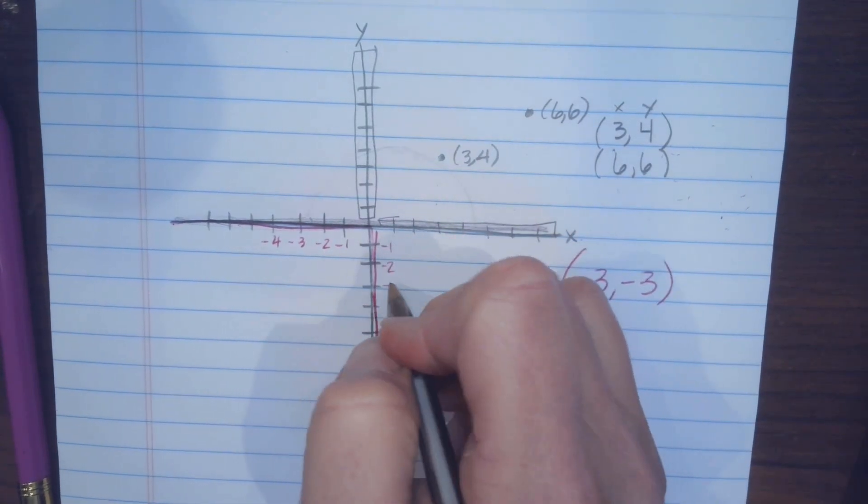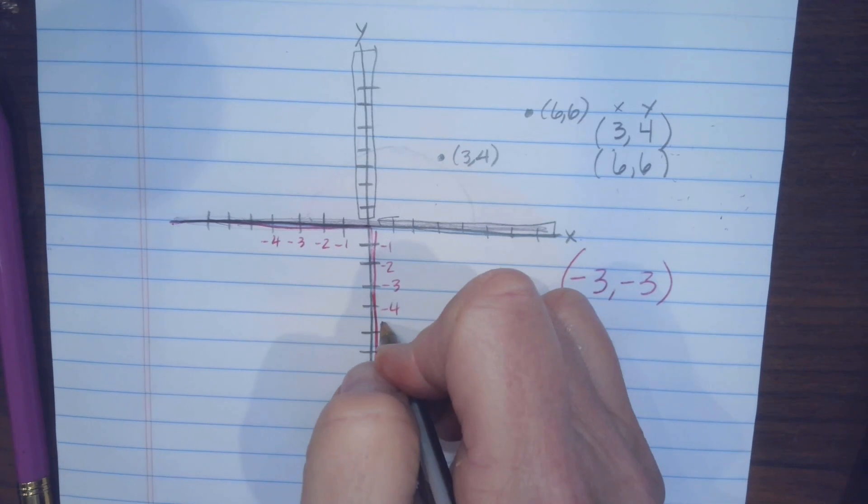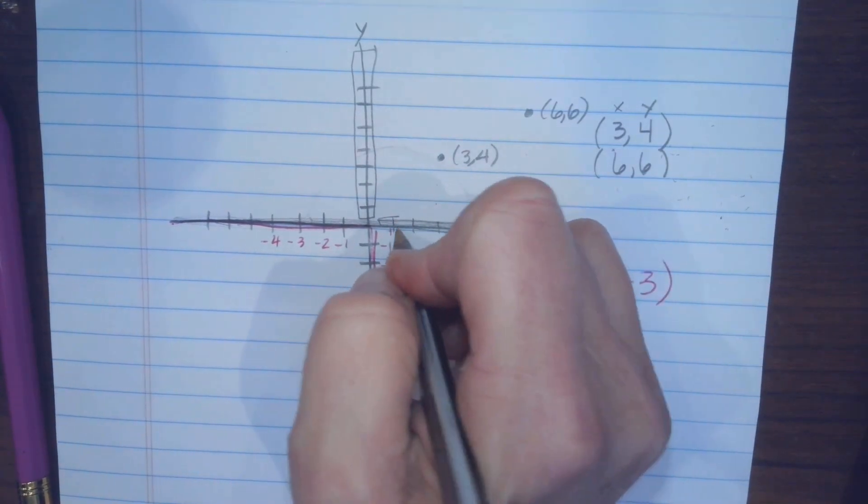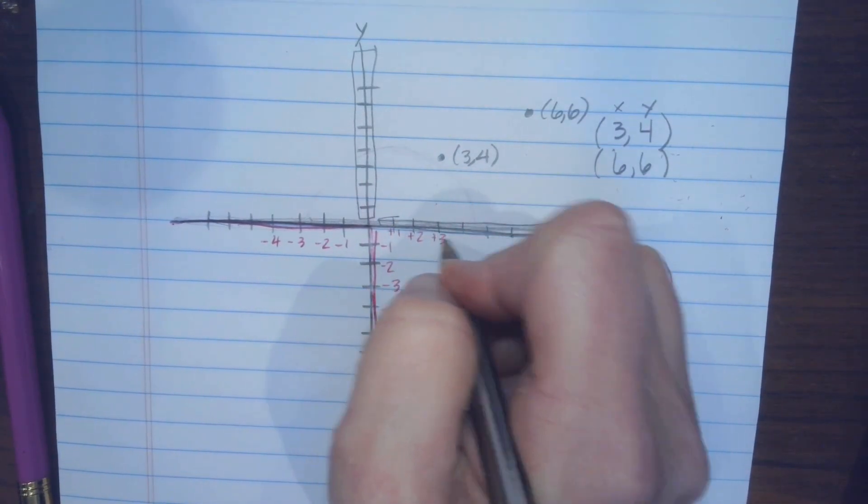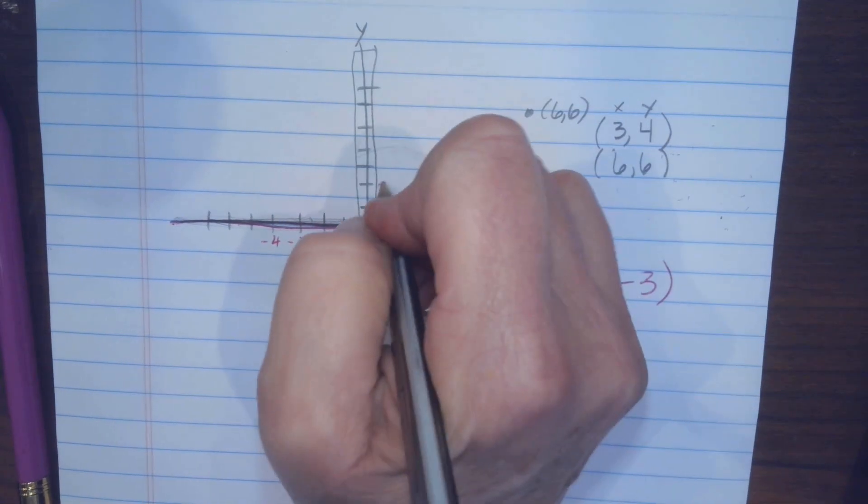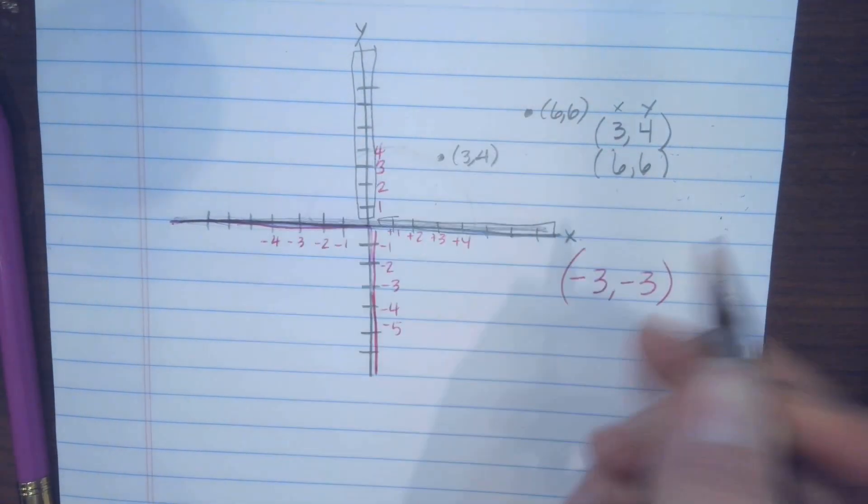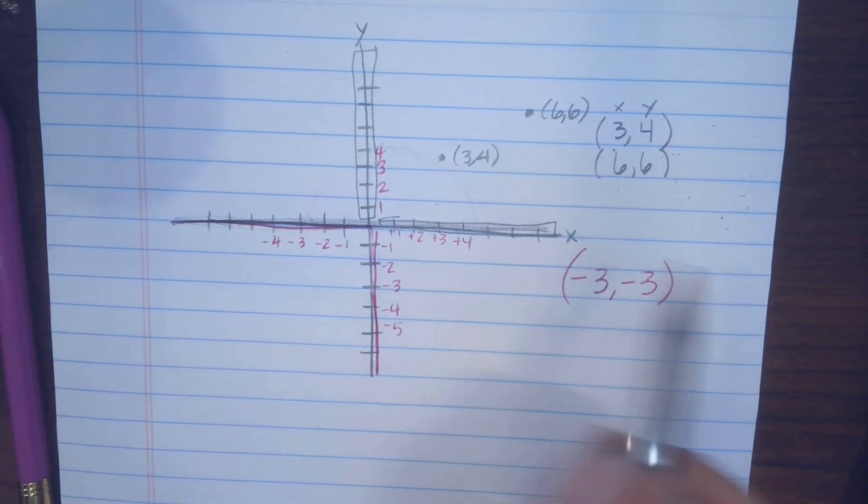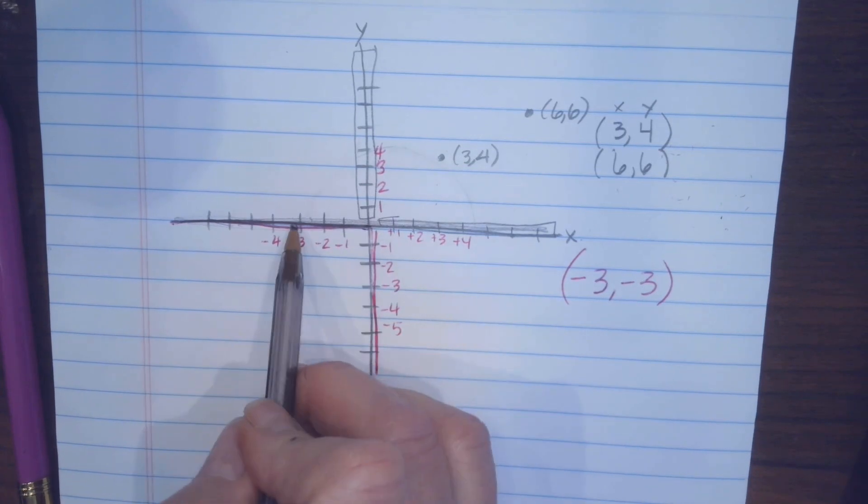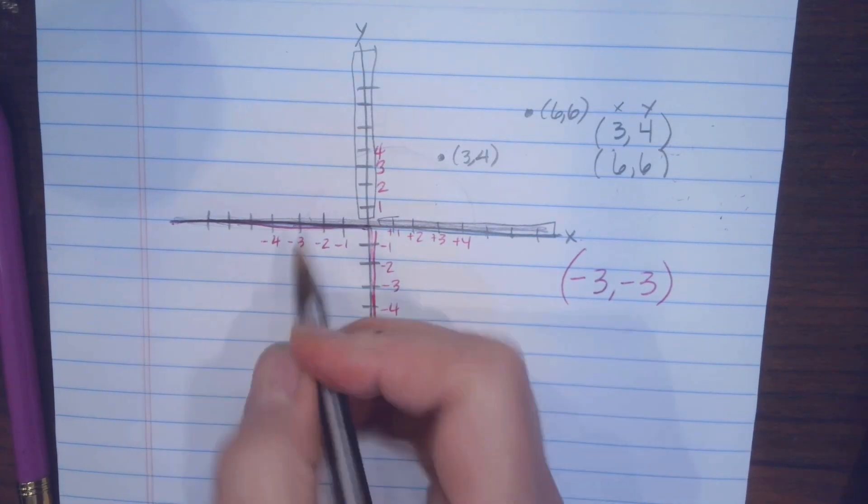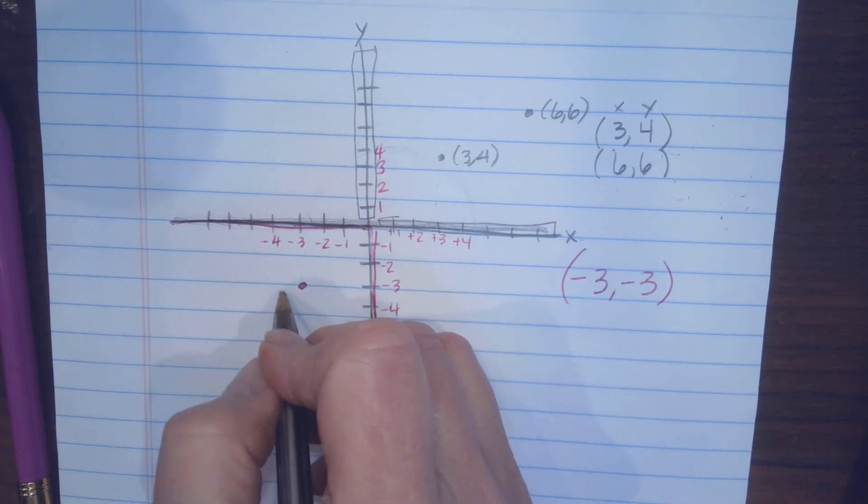Yep. And then this is negative 1, 2, 3, negative 5. This is positive 1, positive 2, positive 3, positive 4. And so on. Yes. So if we're doing negative 3 and negative 3, we're going to go over 3 and we're going to go down 3. Okay.